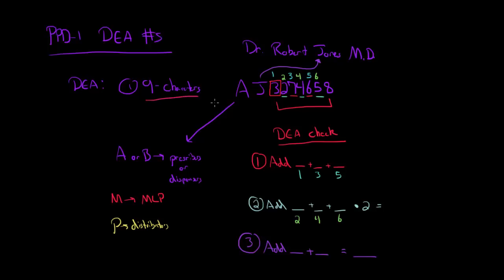So DEA number is nine characters long, includes two letters and seven digits. So let's break it down and see what this really means.